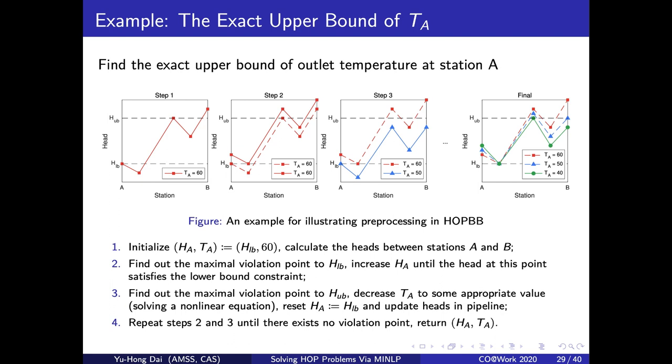If there exists a point that violates the upper bound of the head, then the only thing we can do is to decrease the temperature. This is done by solving a nonlinear equation so that the new temperature will let the point satisfy the upper bound of the head exactly. The coordination of head and temperature is repeated until there is no violation. Finally, we will achieve the exact upper bound of temperature. Also, we can get the infeasibility of the problem if it fails at any step.